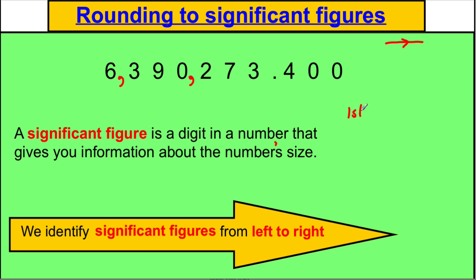So the first significant figure is the 6. And it tells you the number is in the order of size 6 million. The second significant figure is the 3. And it tells you that also you have 300,000 in the number.